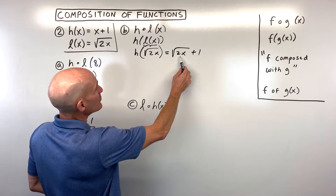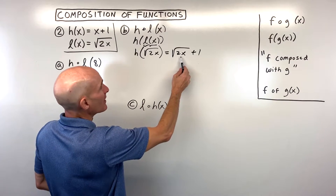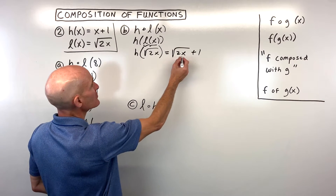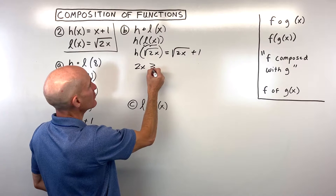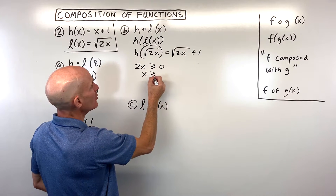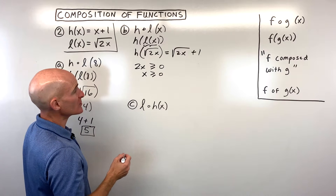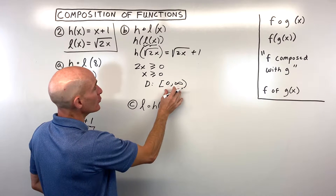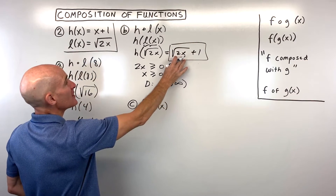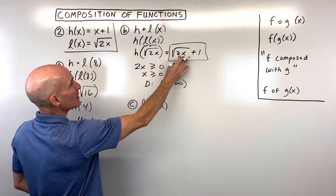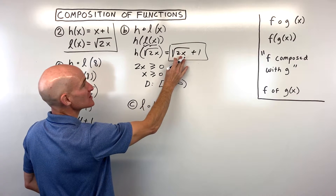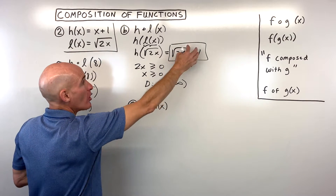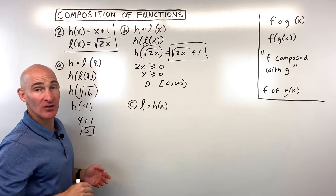Before simplifying — and there's not much to simplify — I analyze the domain. I can't take the square root of a negative number, so whatever's under the square root must be greater than or equal to 0. Dividing both sides by 2, x has to be greater than or equal to 0, or from 0 to infinity in interval notation. Notice: if I put 8 in, I get the same result — square root of 16 is 4, plus 1 is 5. The composition does it all in one equation.